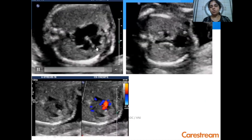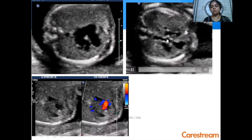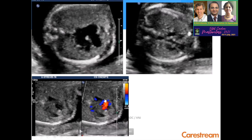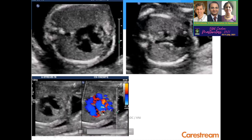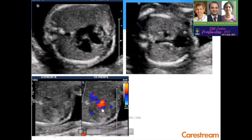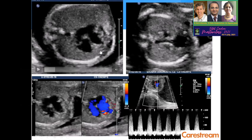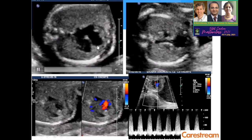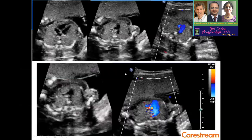This four-chamber view appears normal, but on the three-vessel trachea view, the pulmonary artery is very small. On color Doppler, you can see aliasing, and the regurgitation is not even coming at the level of the tricuspid valves. This is typically Ebstein's anomaly — there is regurgitation with an apical insertion of the valve, the septal leaflet is quite low-placed, which is characteristic of Ebstein's anomaly.